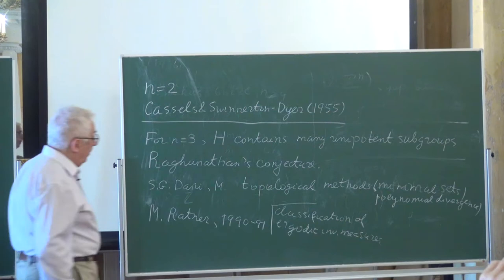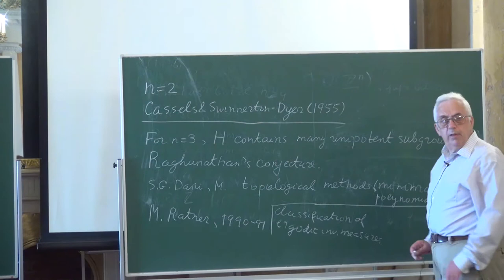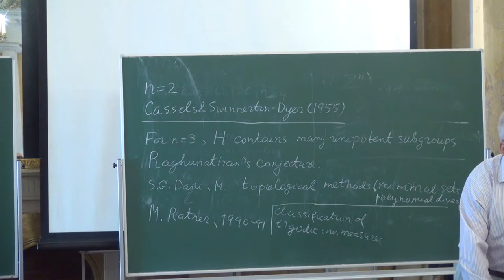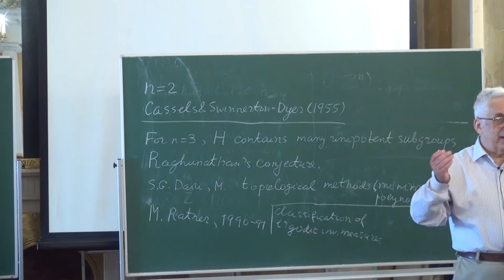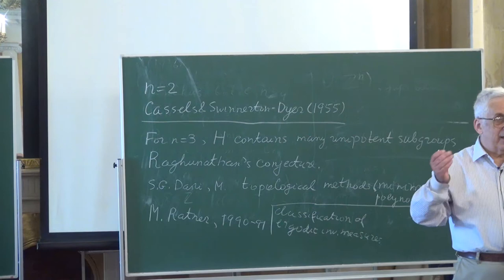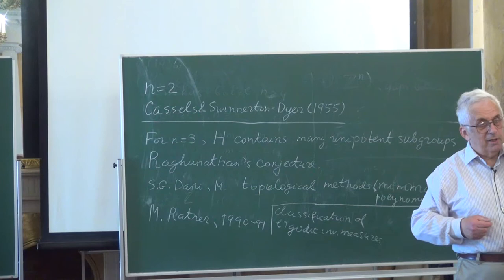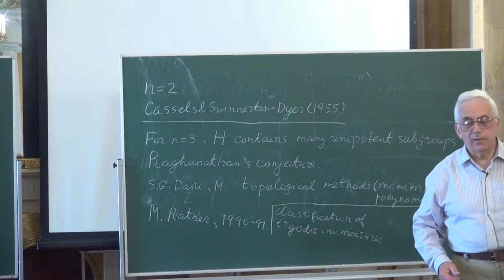Now there are some simplifications — for example, work of Einsiedler and myself reduces it to about 40 pages, but it is still quite a long argument. Someone noted I hadn't formulated Raghunathan's conjecture explicitly.